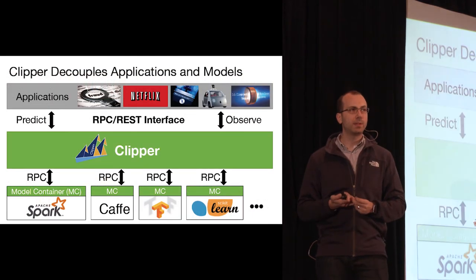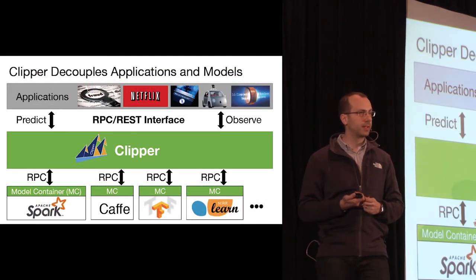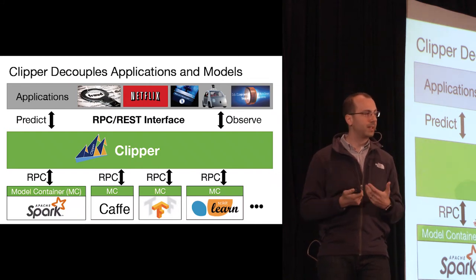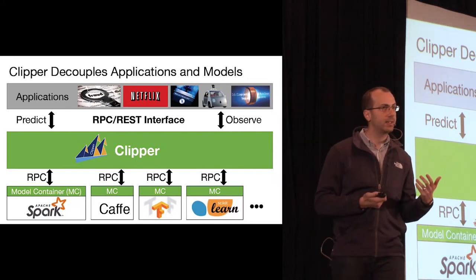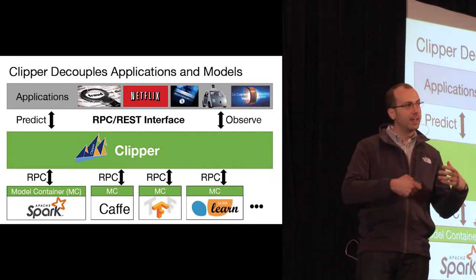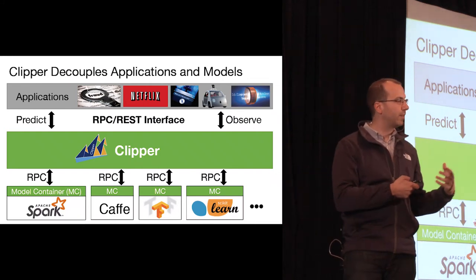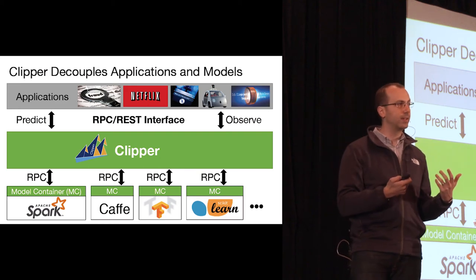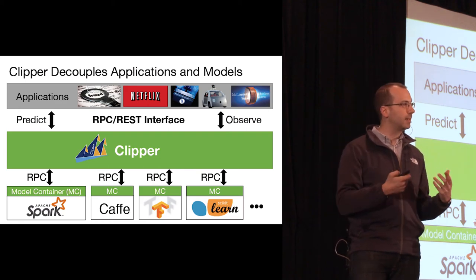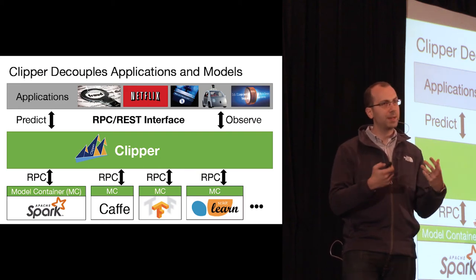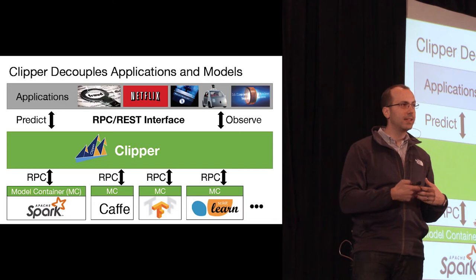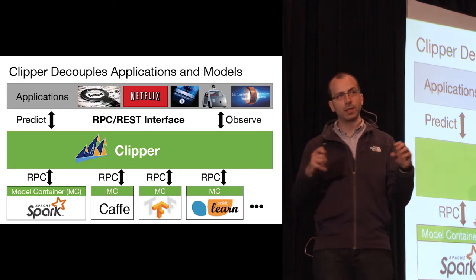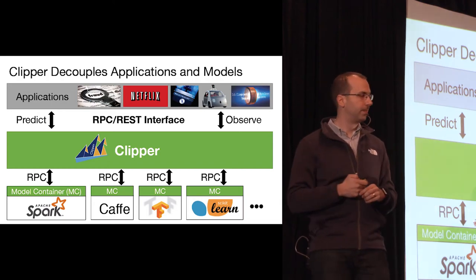Our approach is to build a middle layer — if you're a networking person, that's exactly what you see in this picture. We need some form of abstraction that can sit between these machine learning frameworks, use them in their native capacity, provide a common abstraction, and apply the system optimizations needed for real-time serving above batch training. This finds a middle ground between specialized systems and the pre-materialization strategy, and that is precisely what the Clipper project does.